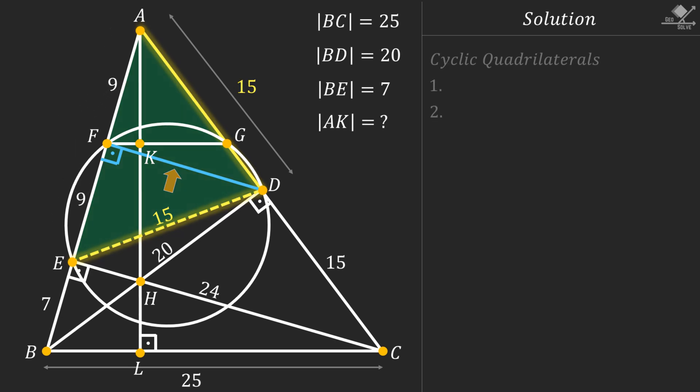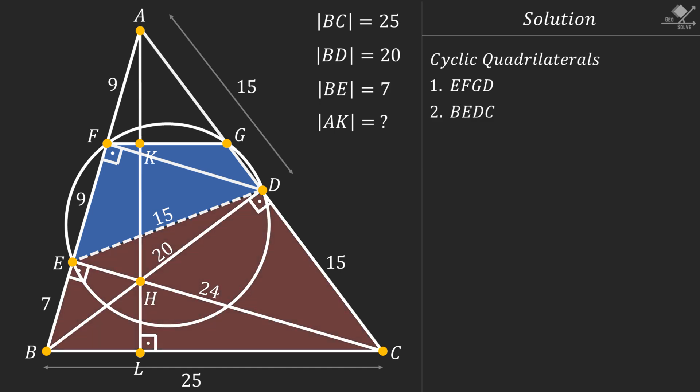After this let's identify two cyclic quadrilaterals in the question. The first one is EFGD and the second one is BEDC. Now we are going to use a handy property of cyclic quadrilaterals: the opposite angles sum up to 180 degrees.